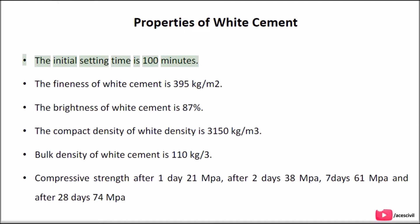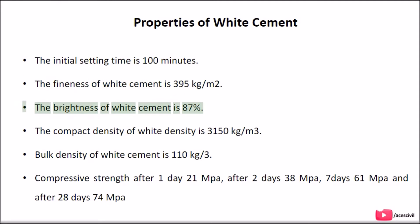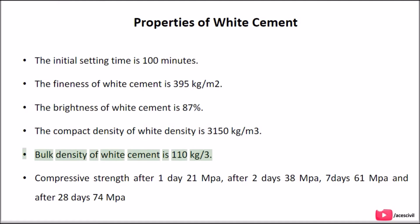Properties of white cement: The initial setting time is 100 minutes. The fineness is 395 kg/m². The brightness is 87%. The compact density is 3,150 kg/m³. Bulk density is 110 kg/m³. Compressive strength: after one day 21 MPa, after two days 38 MPa, after 7 days 61 MPa, and after 28 days 74 MPa.